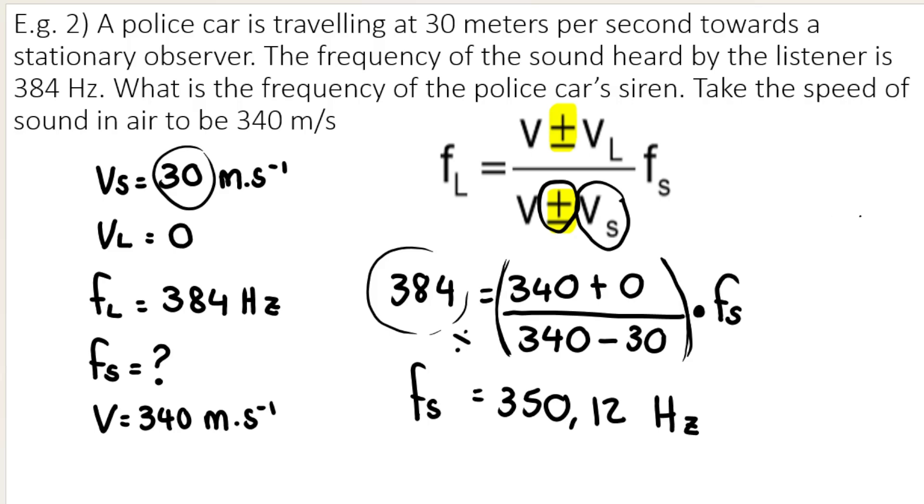Think about it. Here's the police car. It is the source. I'm just drawing a very ugly little car. It's making a sound. It's traveling towards the listener. Here's the listener. So the source is going this way. The listener observes a frequency of 384. Because the source is traveling towards the listener, we expect this number to be higher than the frequency emitted by the source, which is 350.12. So it makes sense that what the listener hears, the frequency observed by the listener is higher.